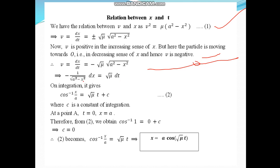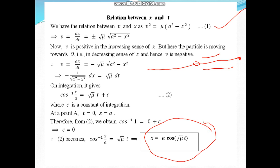Separating variables and integrating, we get cos⁻¹(x/A) = √μ · t + c, where c is the constant of integration. At point A, when t = 0, x = A, so cos⁻¹(1) = 0 gives c = 0. Thus the equation becomes cos⁻¹(x/A) = √μ · t, that is x = A·cos(√μ · t). This is our relation between displacement x and time t.